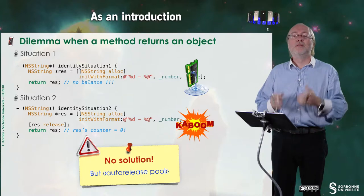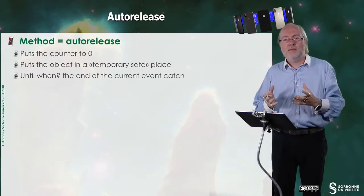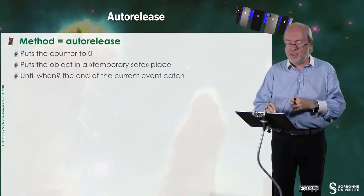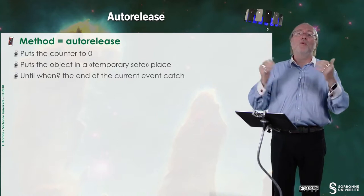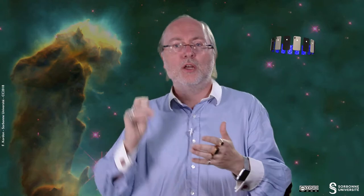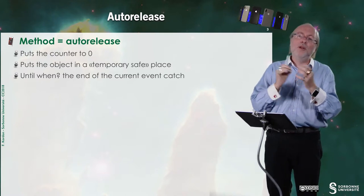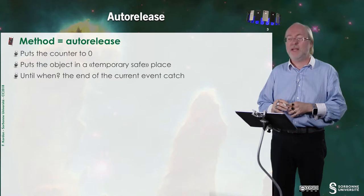There is a solution with the autorelease pool. So, what is the autorelease pool? It's a place where objects having a reference counter set to 0 are temporarily safe. How can you move an object to the autorelease pool? By using the method autorelease. And until when is this object safe? Usually until the end of the current event catch. So, you generate an event, this event generates a call to a handler, the handler executes — maybe invoking some other methods — and at the end, the autorelease pool is released or deallocated.